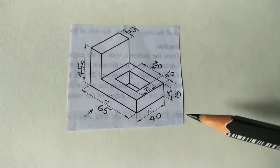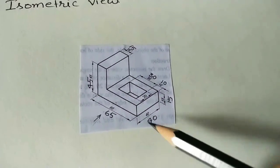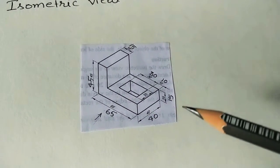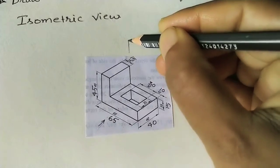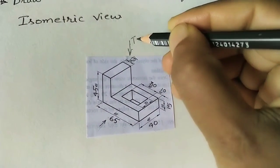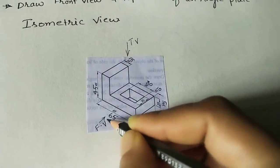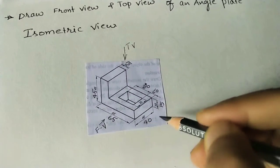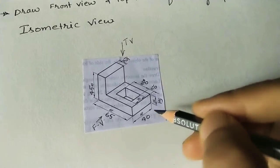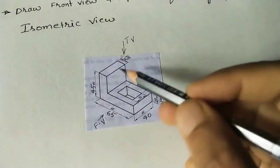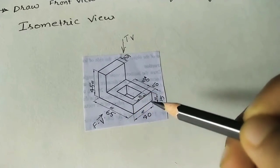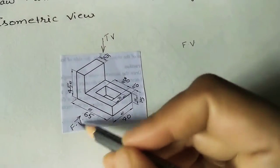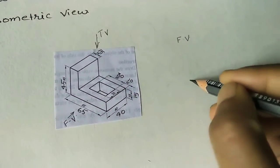Front view means looking in the direction of the arrow given; whatever diagram appears is the front view. Top view means looking from the top of the object. Side view would be taken from the side, but it is not required here. We are following first angle projection, where the front view is drawn first, and below it we draw the top view.